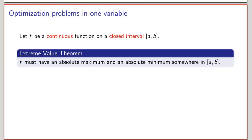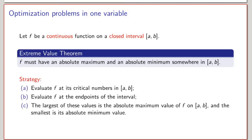That gives a very natural three-step strategy for optimizing a function over a closed interval. The first step is to evaluate the function at its critical numbers. The second step is to evaluate the function at the end points of the interval. The third step is to compare all these values: the largest will be the absolute maximum and the smallest will be the absolute minimum.